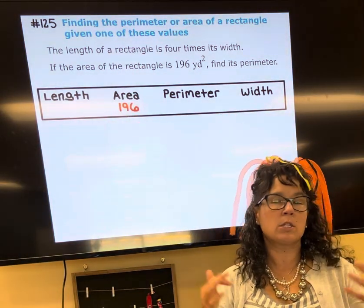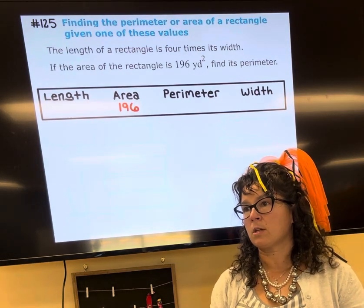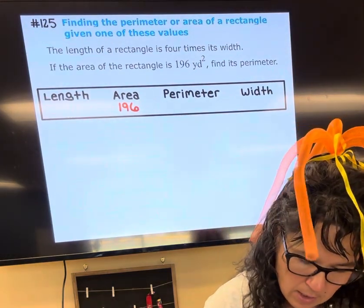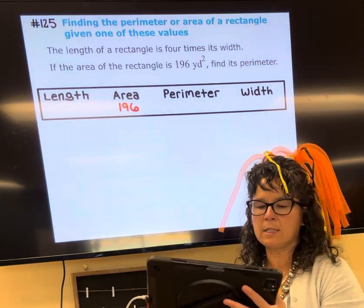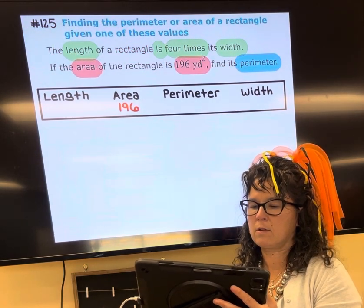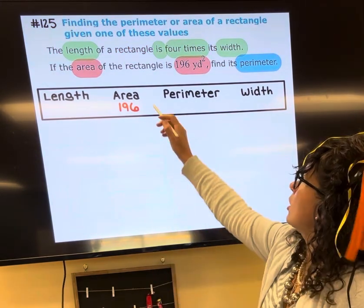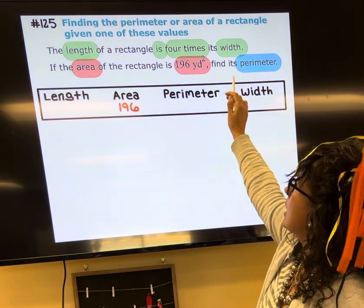This is going to tell us that we want to build three equations. Now let me go ahead and highlight a couple of the sentences or fragments here. Starting with this one: the length is four times the width.